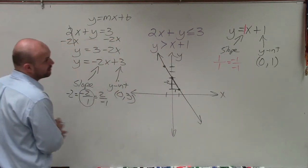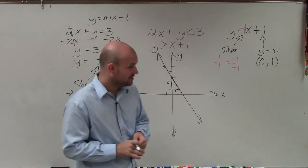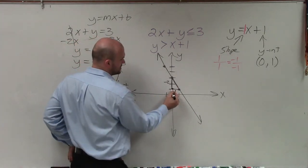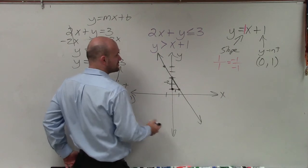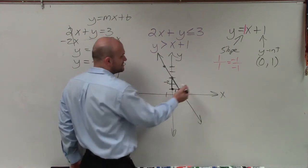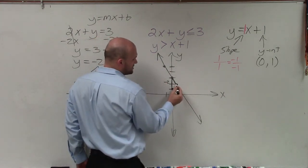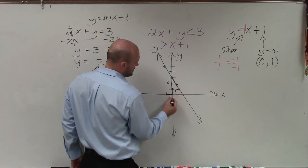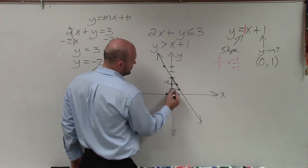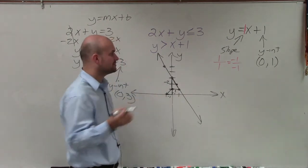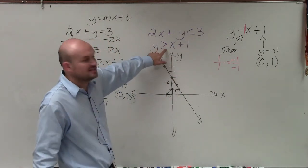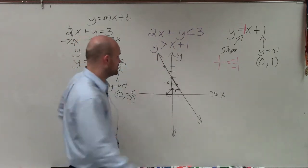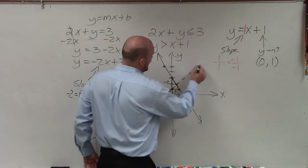Next we're going to graph y equals x plus 1. Again, we plot the y-intercept at (0, 1), then follow the slope. In this case I can go up 1 over 1, which takes me to the next point, or down 1 to the left 1, which takes me to the same point. Now the difference with this inequality is that it is greater than — not greater than or equal to — so this boundary line is going to be dashed.